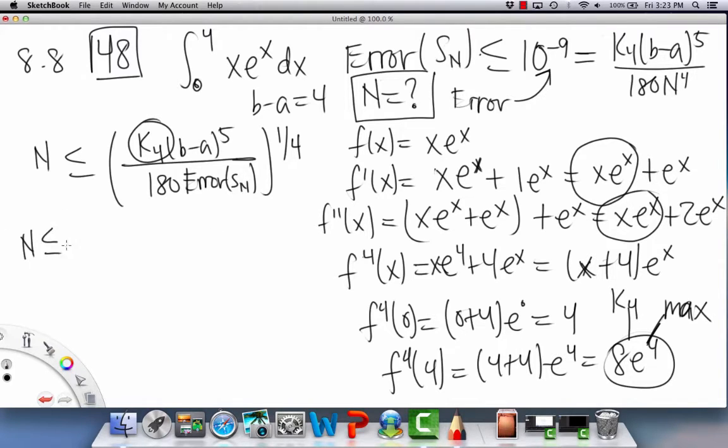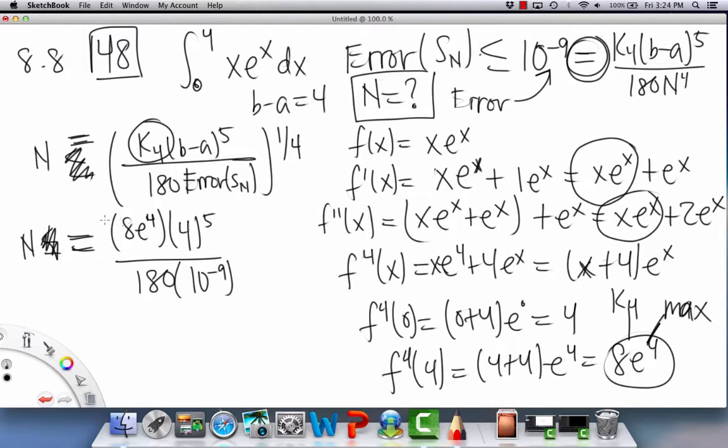Okay, so when we plug it in to this formula, oh, okay, wait, hold on a minute, I have to fix something. So this is not, also on the previous problem, this is supposed to be equals, I'm sorry. Yeah, because there's an equal sign here, so that's actually what comes out, not a less than or equal to. I thought that looked funny. So n equals, and then our K4 is 8*e^4, and then (b-a) is 4^5 over 180, and then our error they want it to be 10 to the negative 9, and all of this is to the 1/4 power. So n turns out to be a less pretty number, but it's something like this, which is about 1255.52.